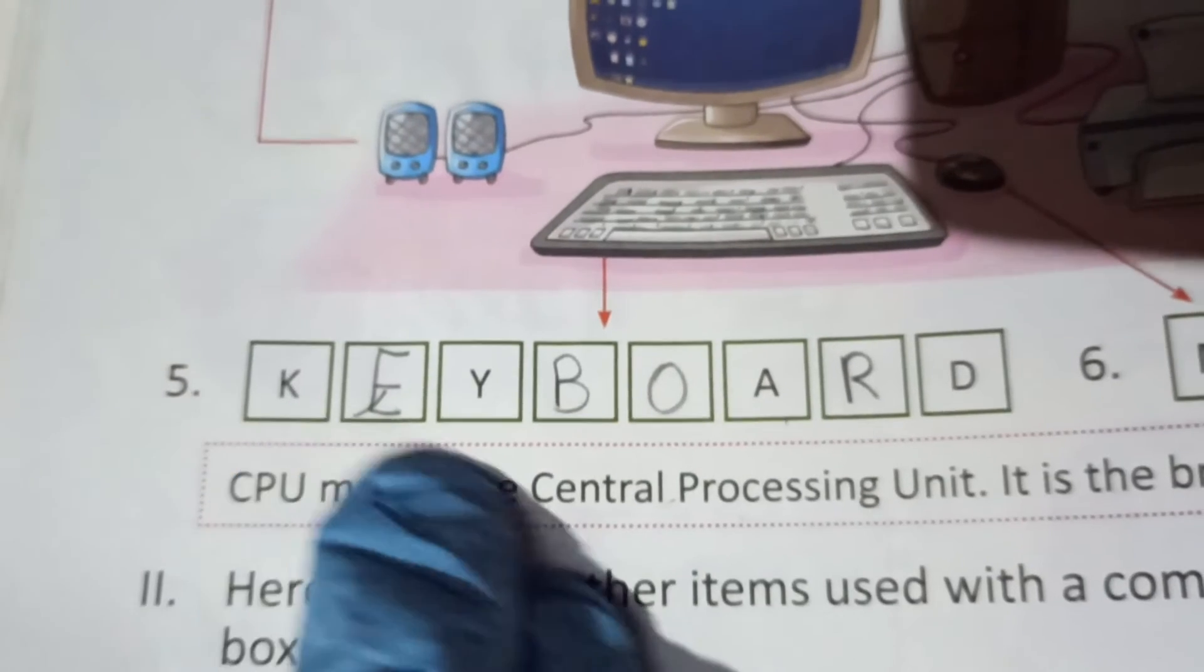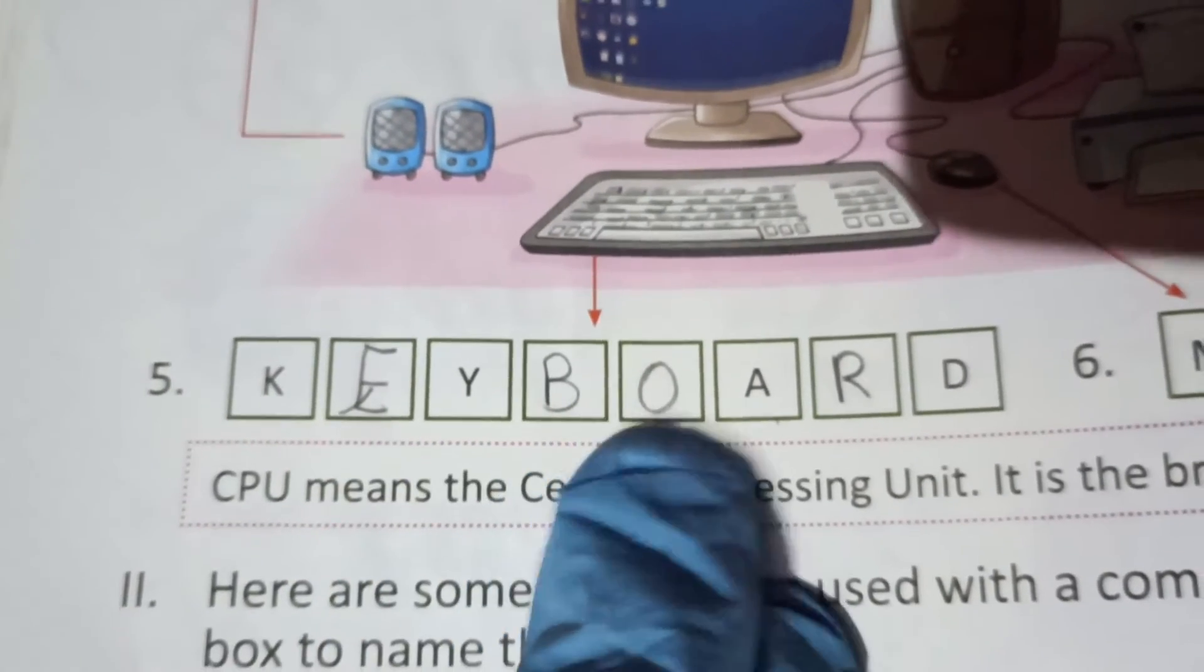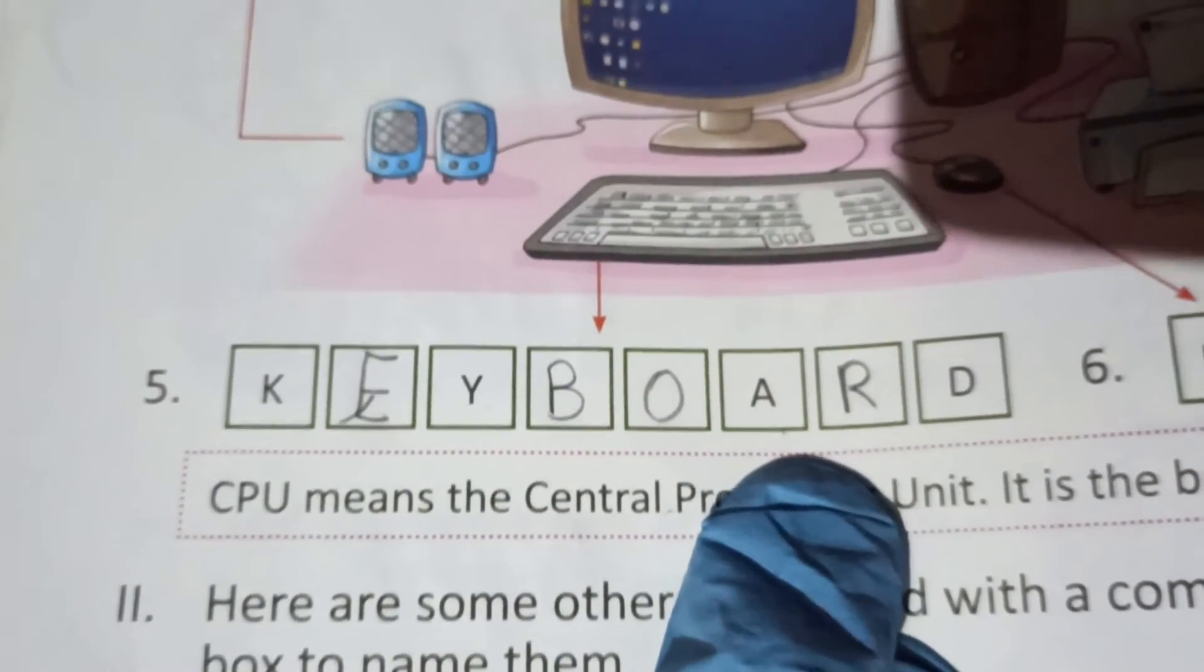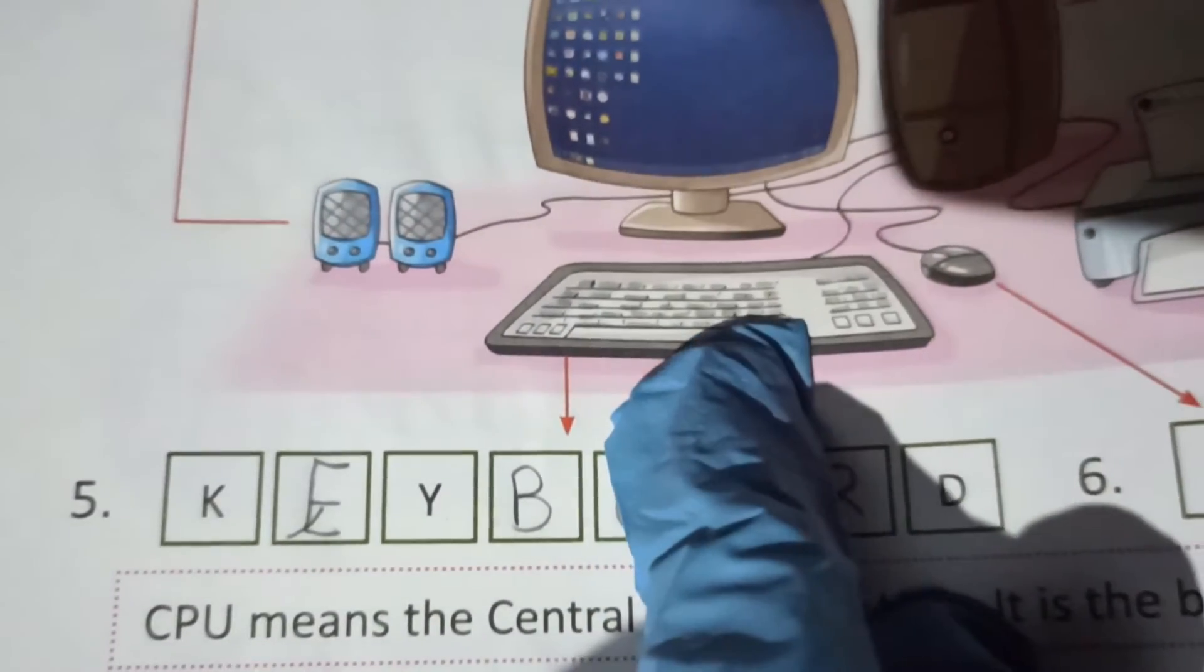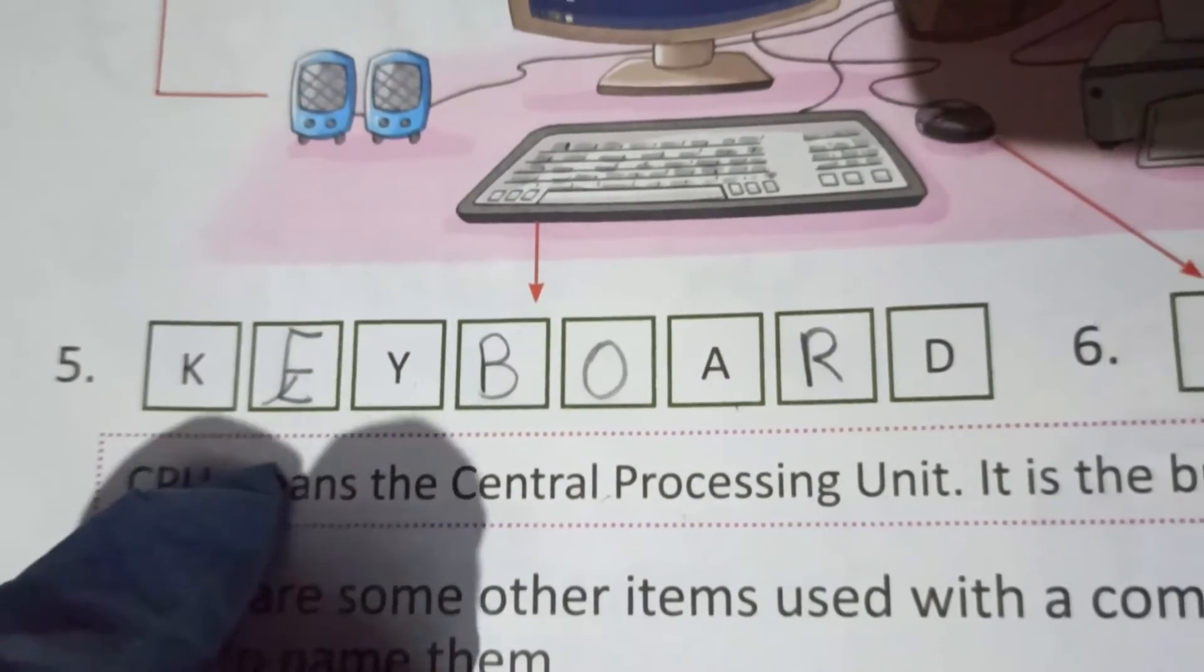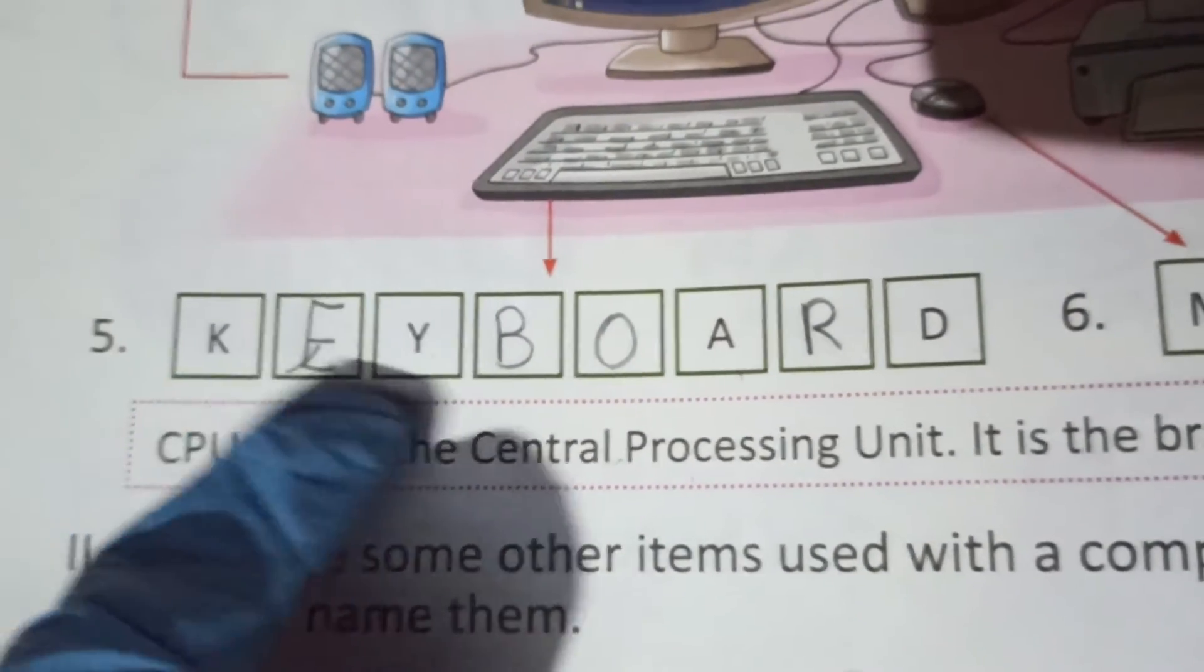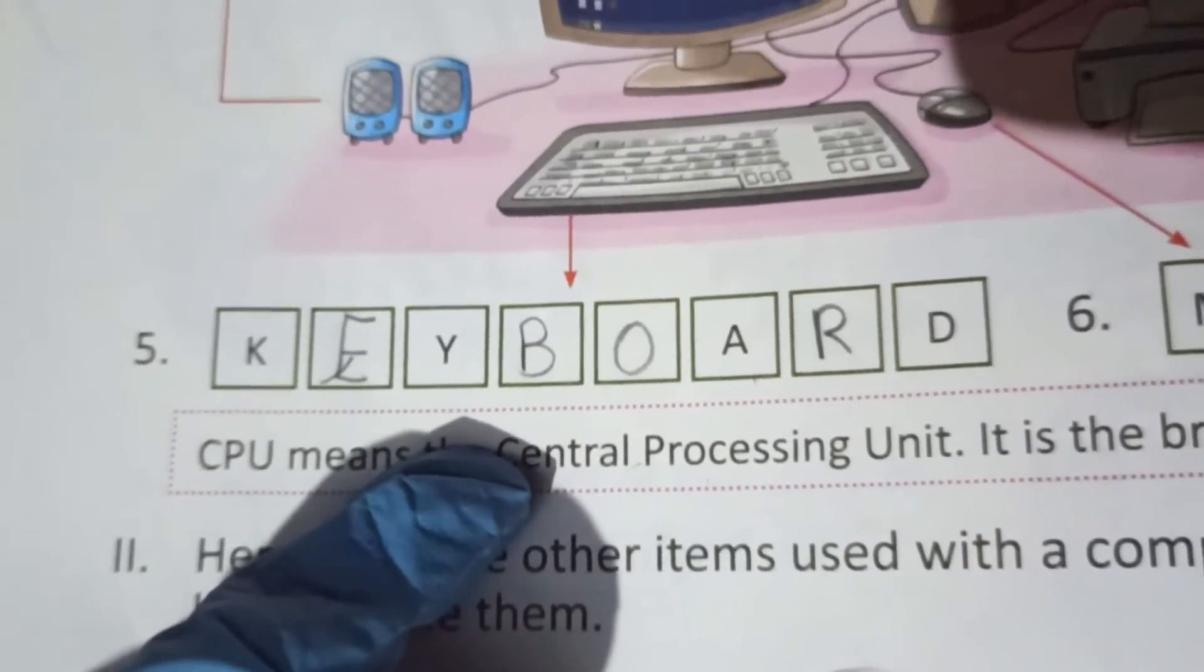Now come to the fifth one, that is K-E-Y, key, B-O-A-R-D, board, keyboard. This is a keyboard جس پہ بہت ساری keys ہوتی ہیں. Write down the spelling of keyboard, K-E-Y, key, B-O-A-R-D, board, keyboard.